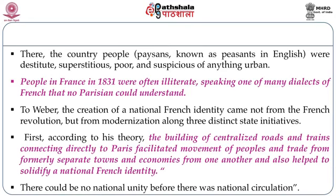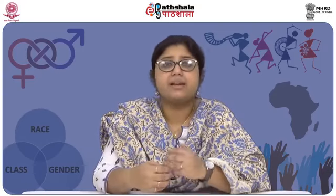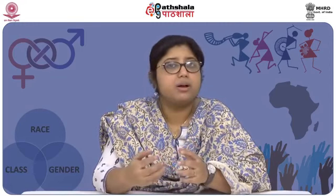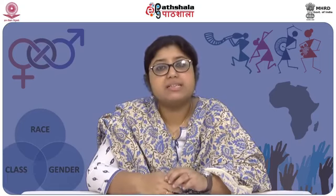The creation of a national French identity came not from the French Revolution but from modernization along three distinct state initiatives. First, the building of centralized roads and trains connecting directly to Paris facilitated movement of people and trade from formerly separated towns, helping to solidify a national French identity. The effect of nationalism can only be achieved when there is connectivity among the places of a country — when people can communicate, establish trade relationships, and understand people of other places within their own country as their own people. There could be no national unity before there was national circulation.